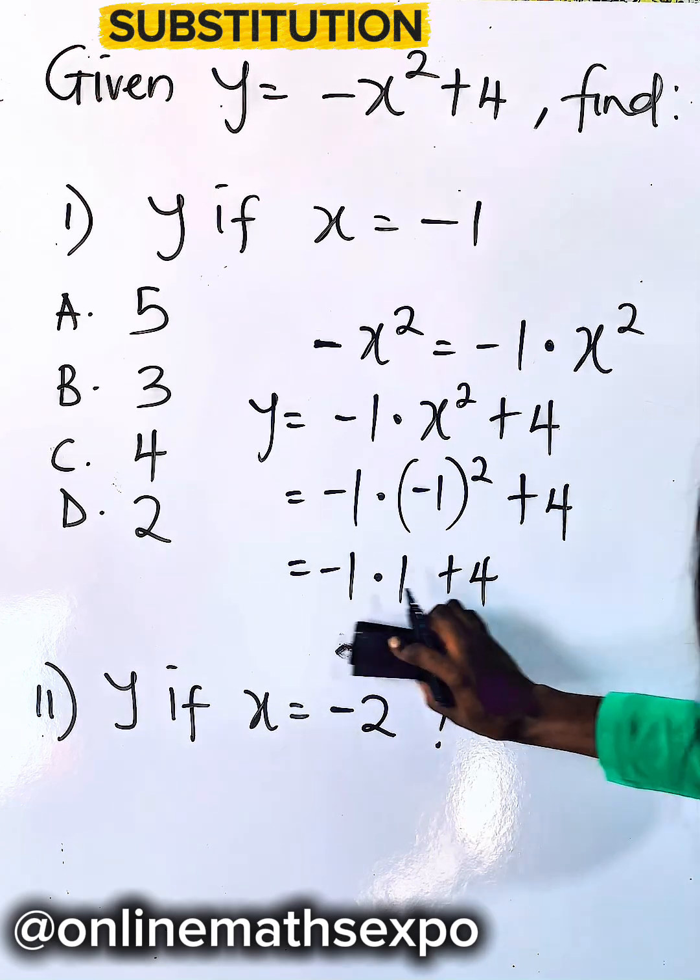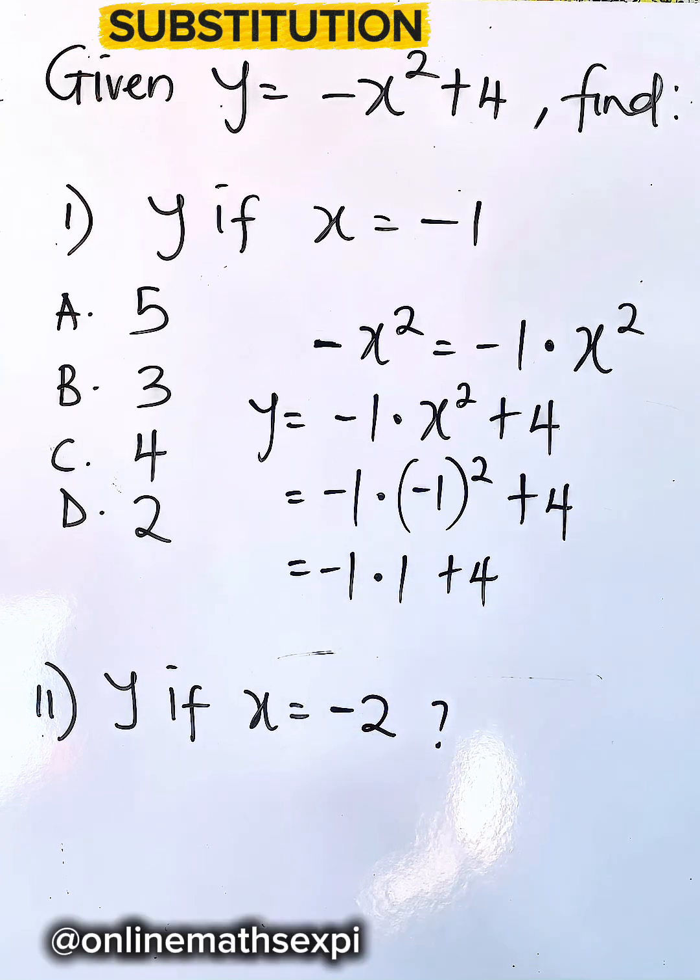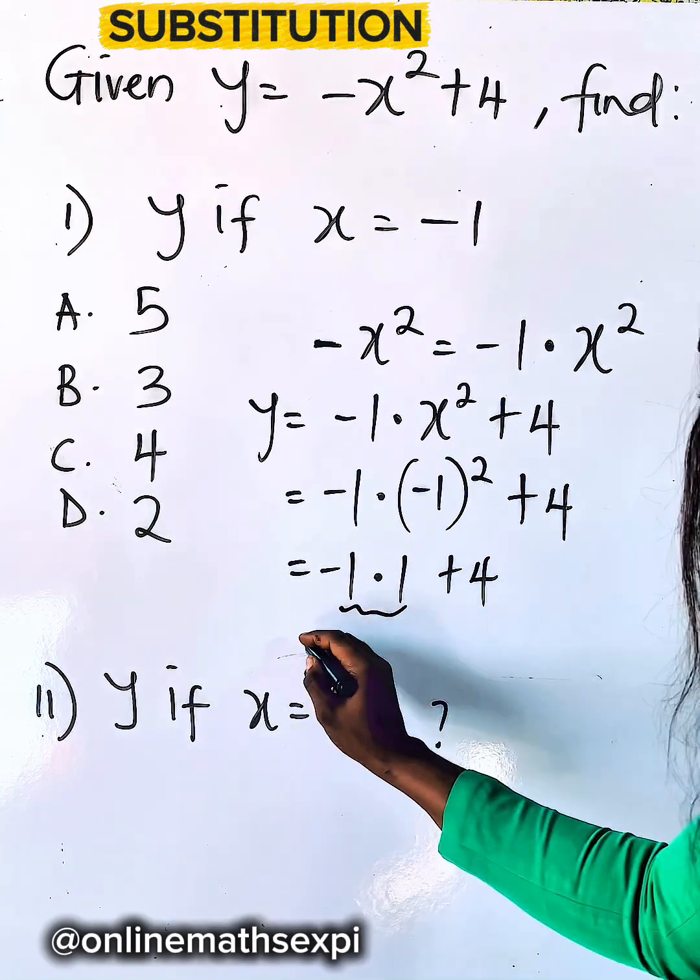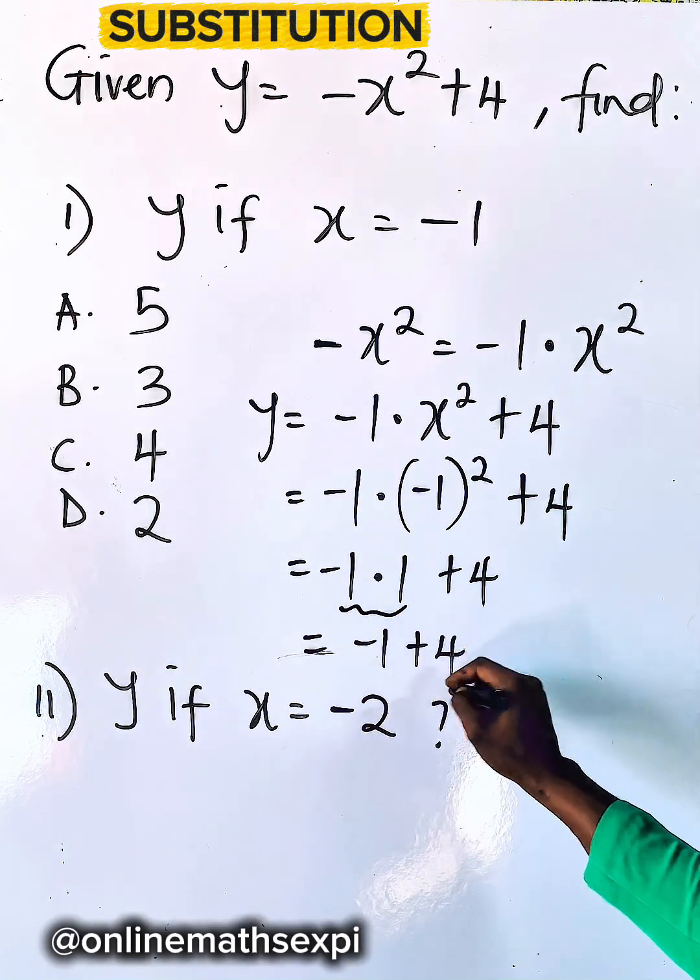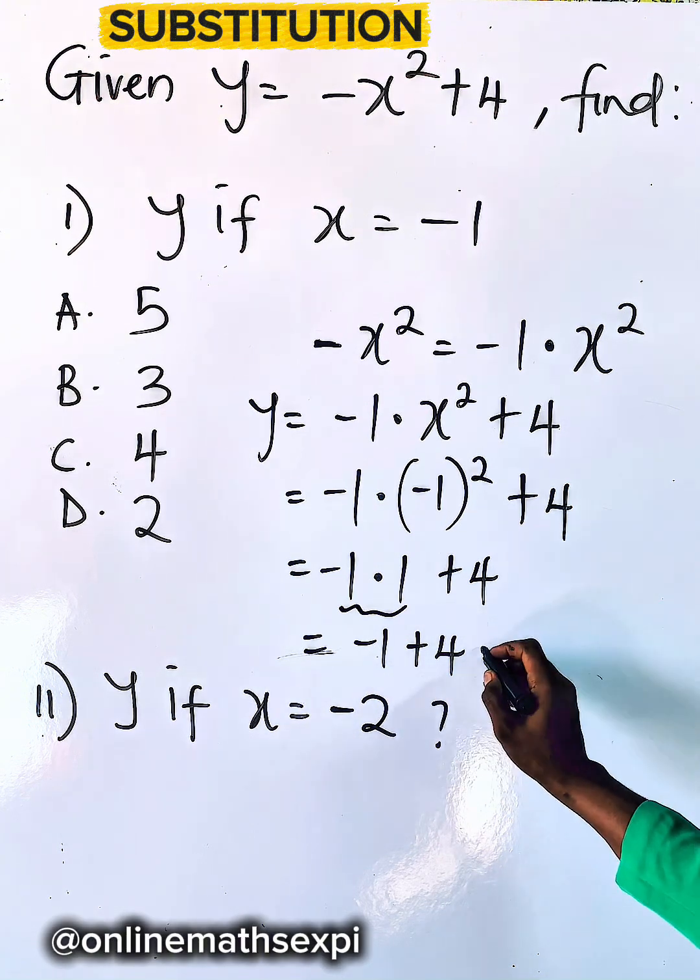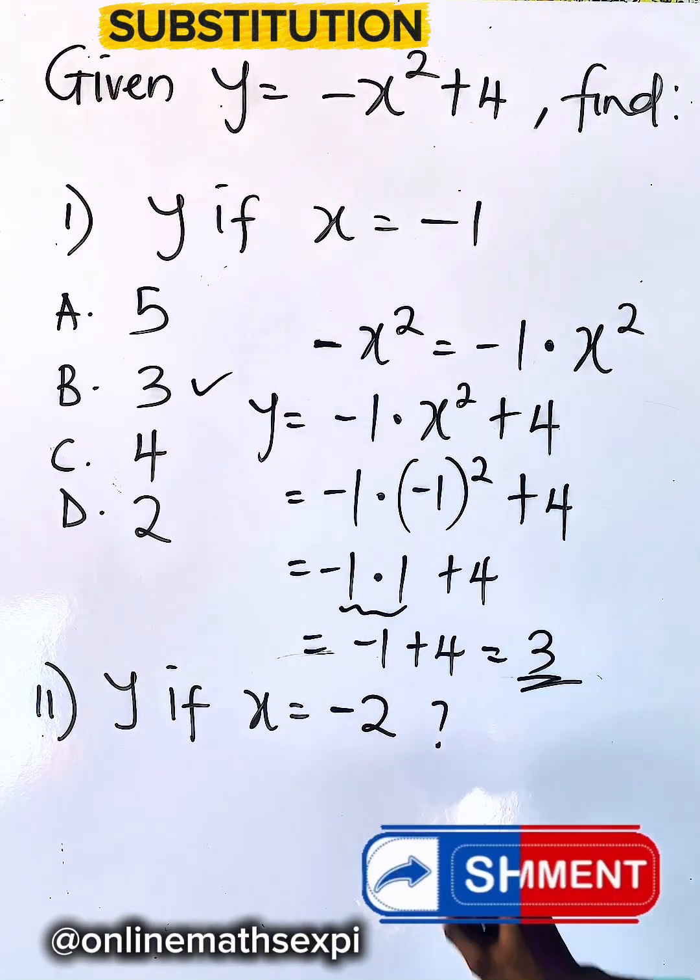So what do you do next? Multiplication is done first. So multiply these two, it gives you -1. Then add 4, and when you add this, it gives you 3. And that is option C.